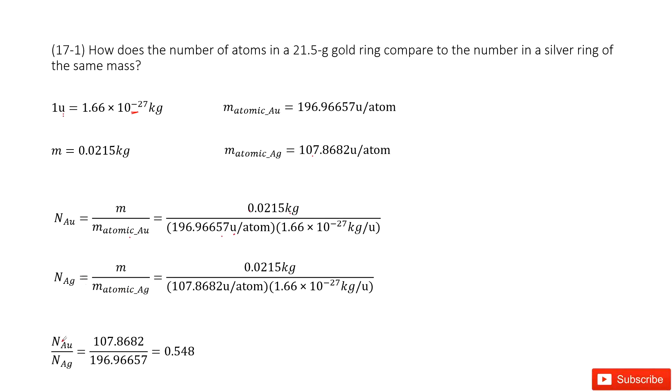Now we take the ratio for the number of gold to silver, and it equals 0.548. Thank you.